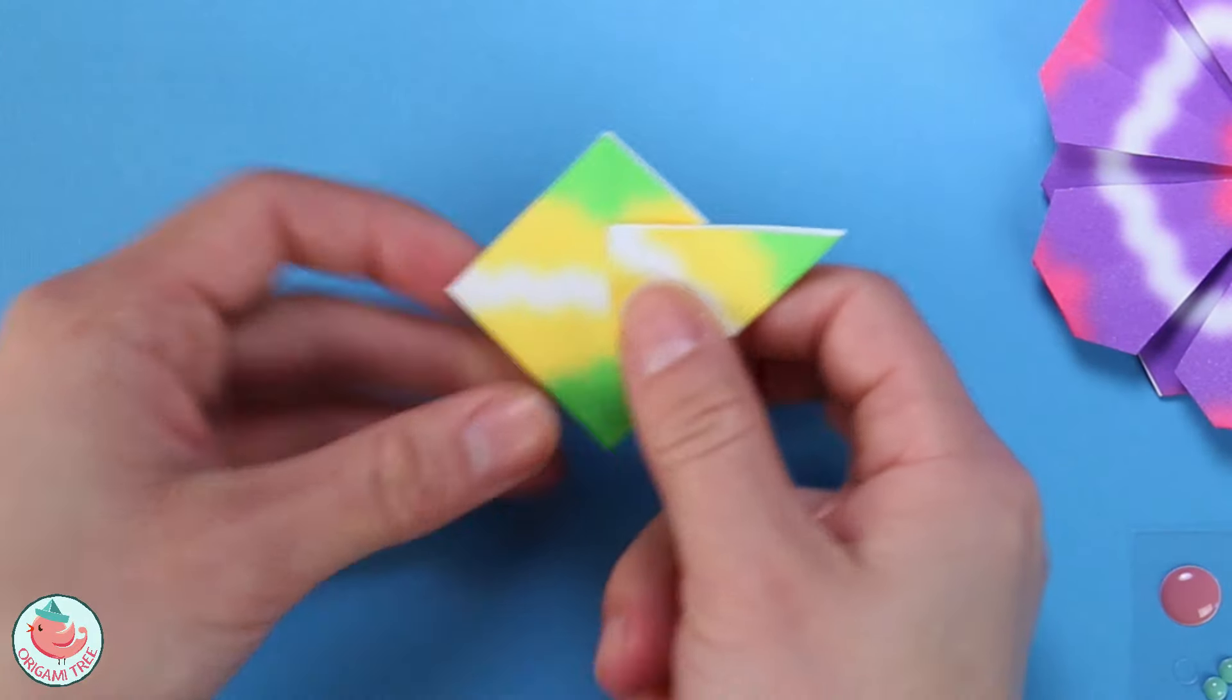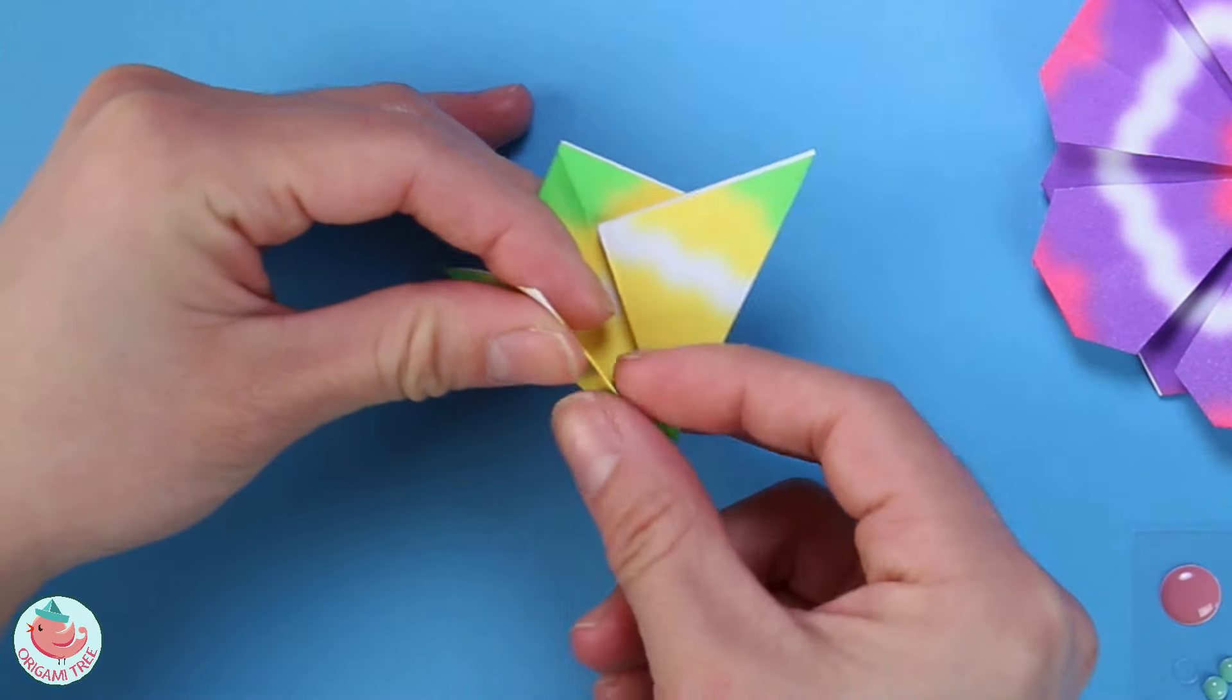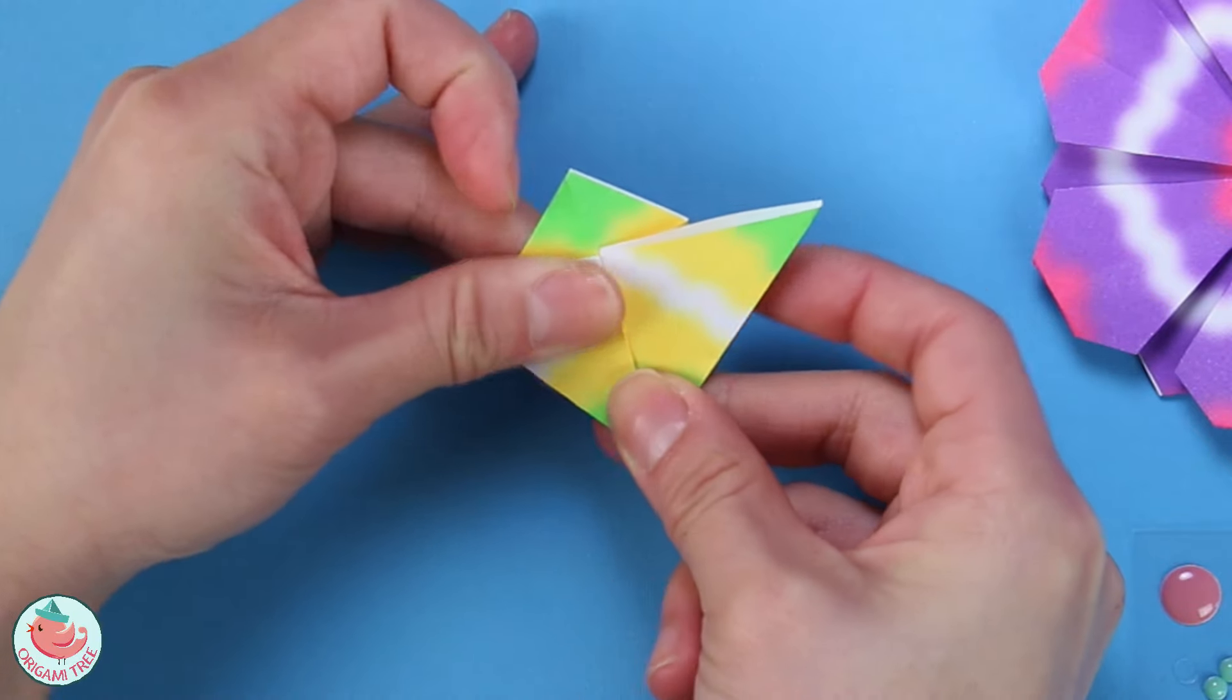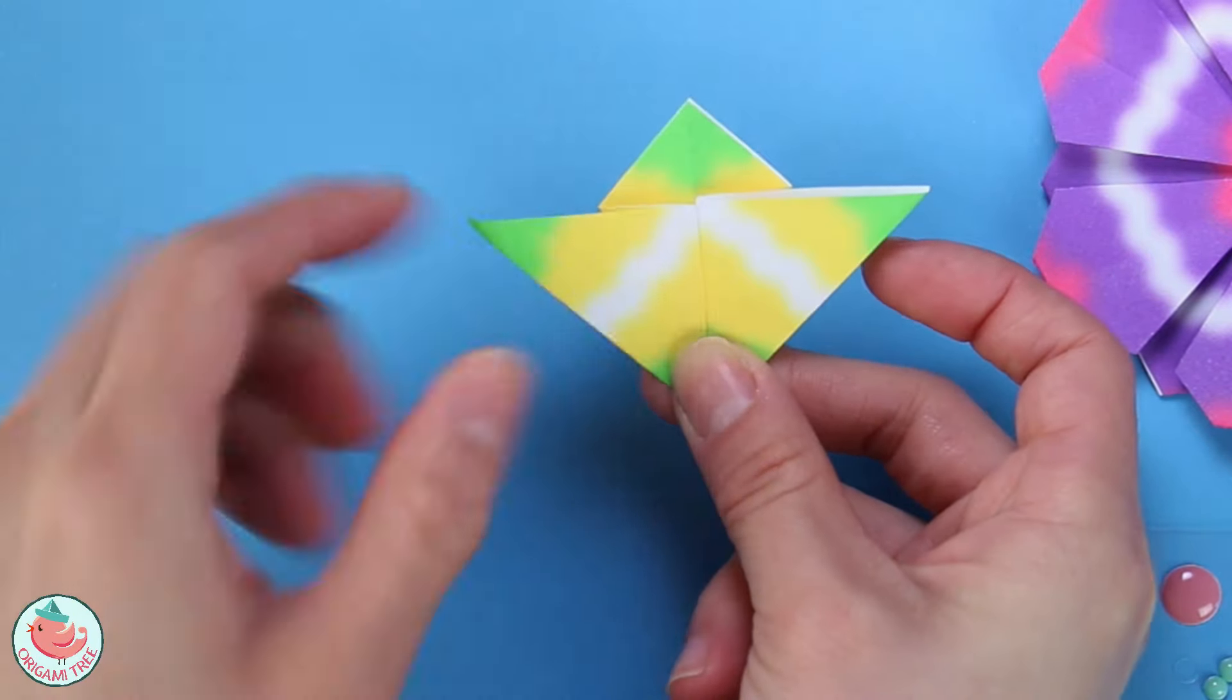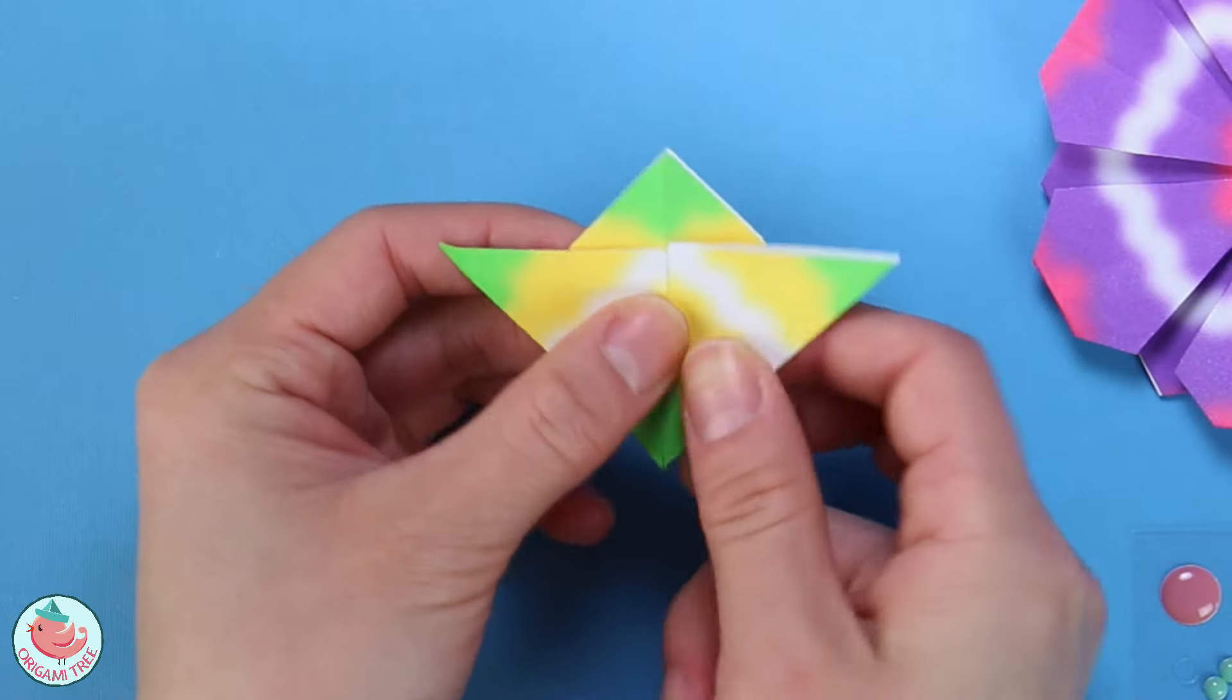So now let's do the exact same thing on the other side. So we're going to take this side, fold it diagonally to the vertical center line and kind of just let this triangle swing on over to the top there.